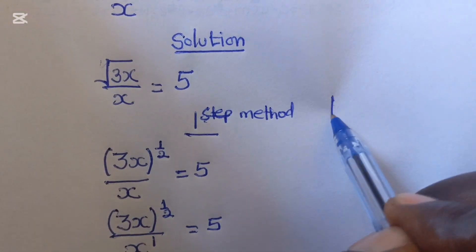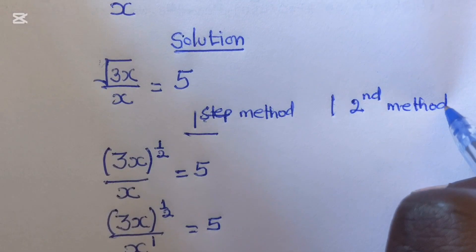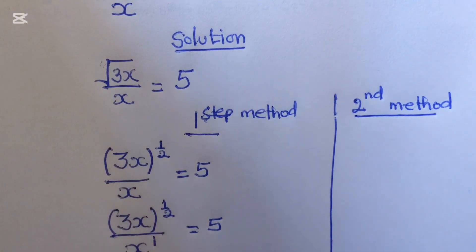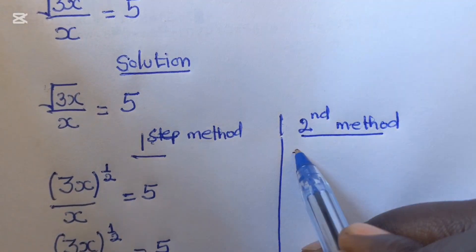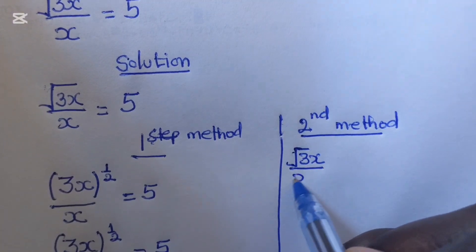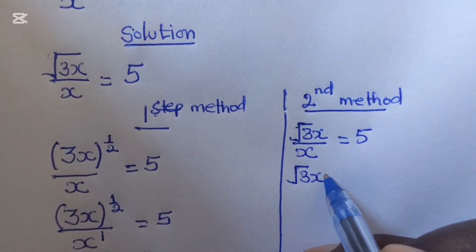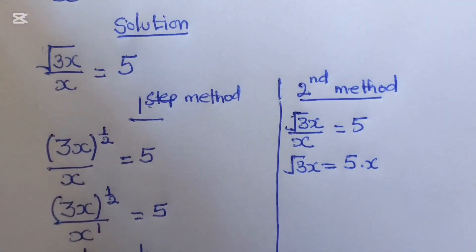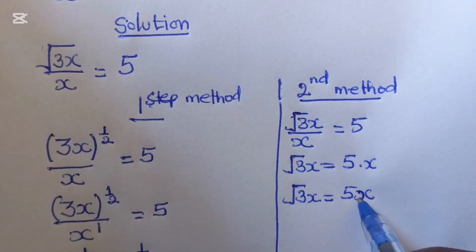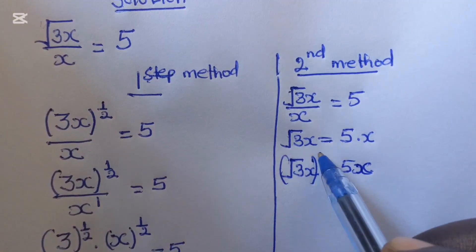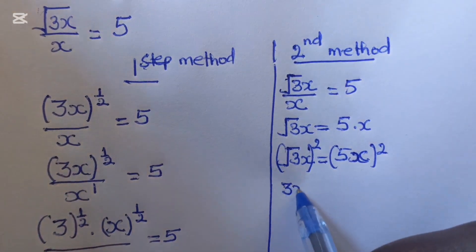Now for the second method. We again have square root of 3x over x equals 5. Here we use cross multiplication to get: square root of 3x equals 5 times x. Now by squaring both sides — what you do on one side you must do on the other — this gives 3x equals 25x squared.